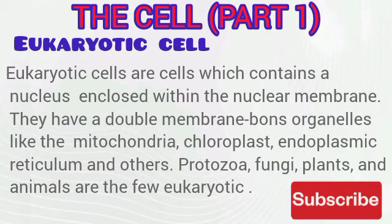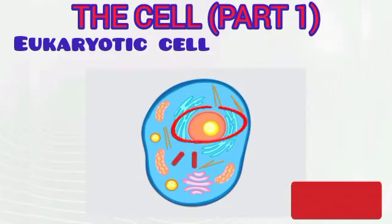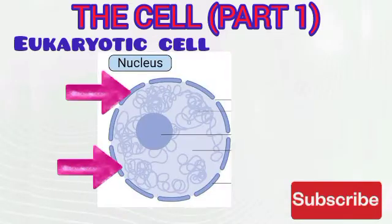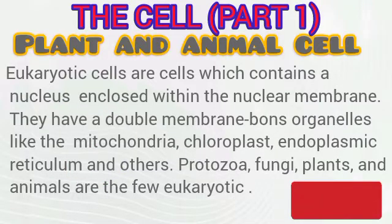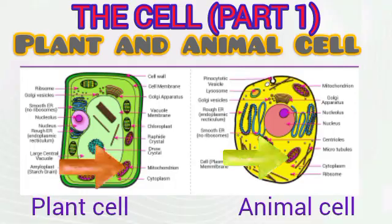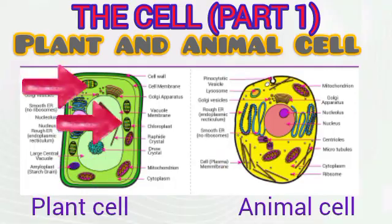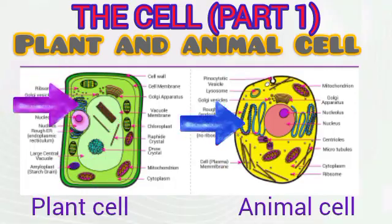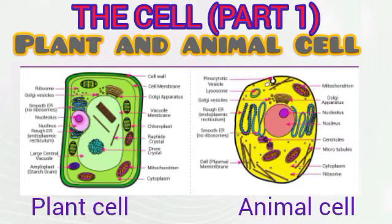Let's talk about the eukaryotic cell. These are cells which contain a true nucleus — a nucleus that is actually enclosed within the nuclear membrane. They also possess double membrane-bound organelles like the mitochondrion, the chloroplasts, the endoplasmic reticulum, and others. Details of these cell components and their functions, both for the prokaryotic cell and the eukaryotic cell, will be discussed in part 2 of this video.